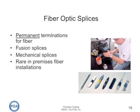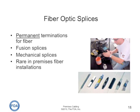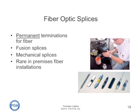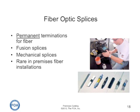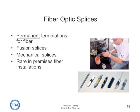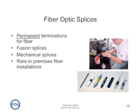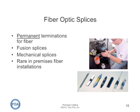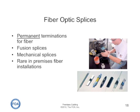Permanent joints between two fibers can be done with fusion splicing in an electric arc, or mechanical splices in a mechanical device that holds two fibers together with index matching gel between them to reduce reflections. In actuality, splices are rare in premises fiber installations, where connectors are normally used to allow easy moves, adds, and changes.